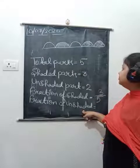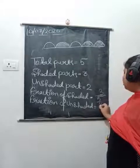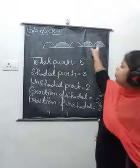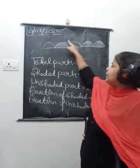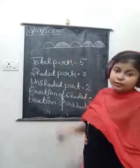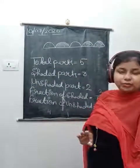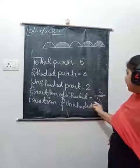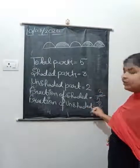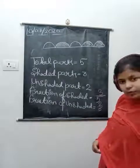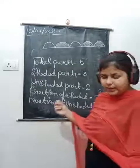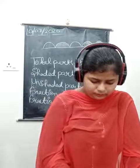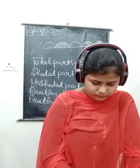Fraction of unshaded part is two upon five. Why two upon five? Because out of five parts, two parts are unshaded - the ones that have not been shaded. So fraction of unshaded parts is two upon five.